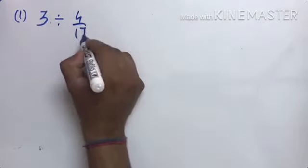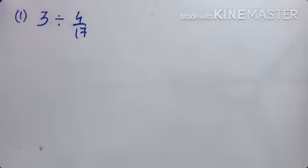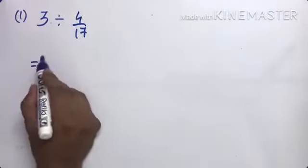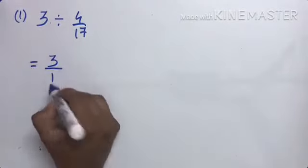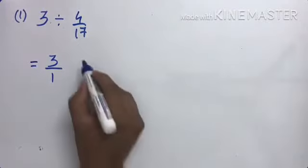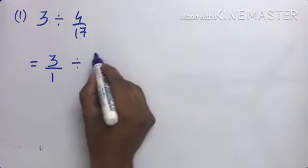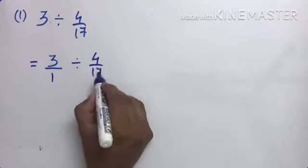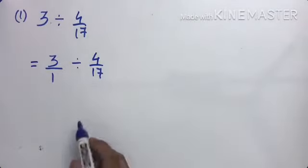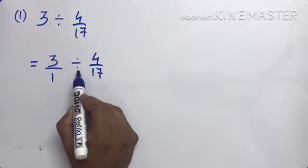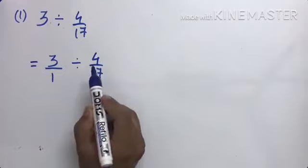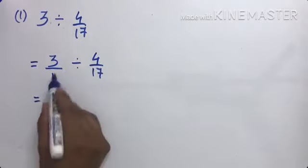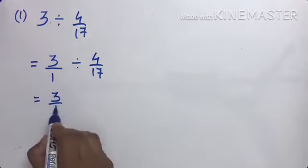4 by 17 — अभी हम directly divide नहीं कर सकते। पहले लिखता हूँ: 3 by 1 divide by 4 by 17। अभी divide को मैं multiply में change करूँ तो यह पीछे का जो भी fraction है उसका reciprocal हमें करना है।